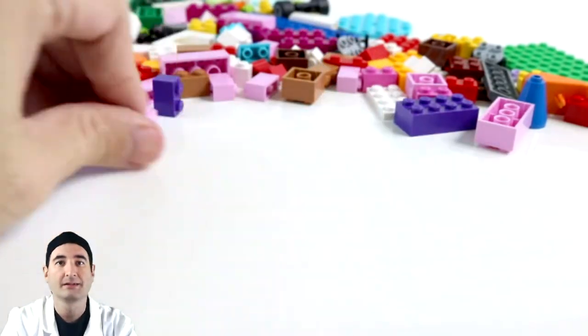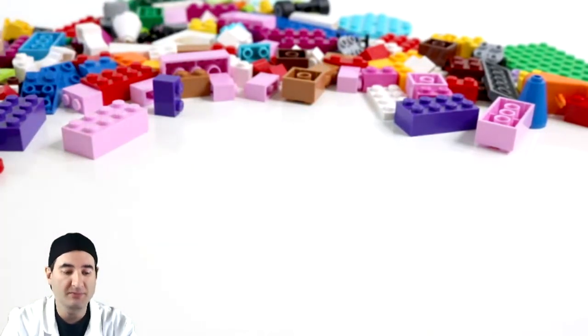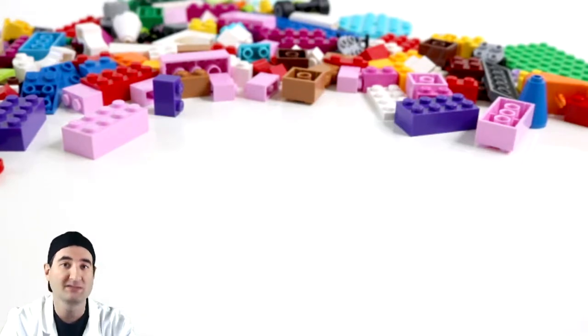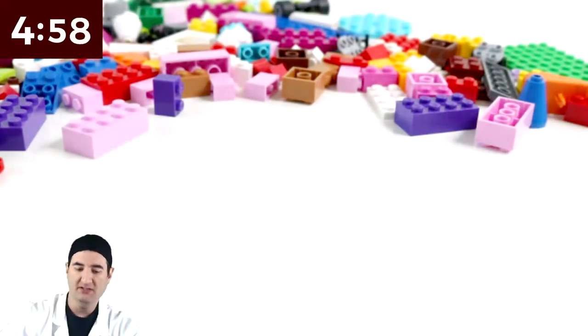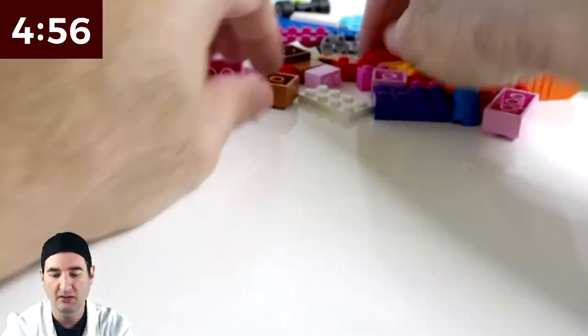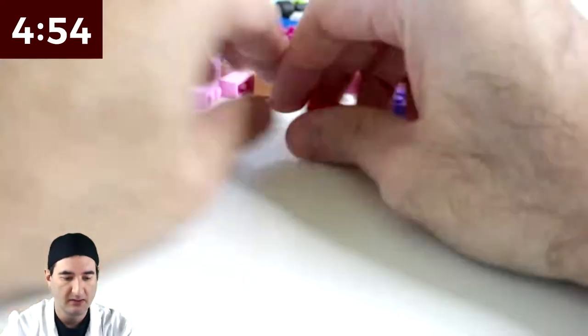Let's get started. Let's build a crop duster like Dusty from the Planes movie. Let's put five minutes on the clock and let's get started. I want to have something at the front with the propeller.